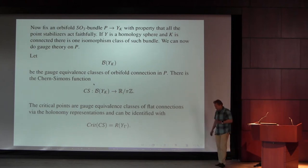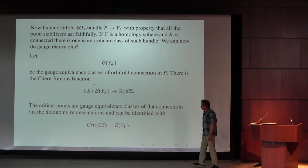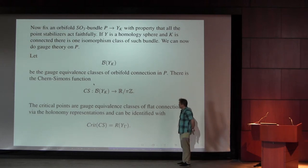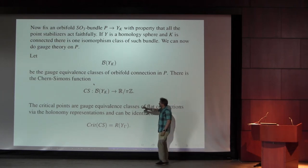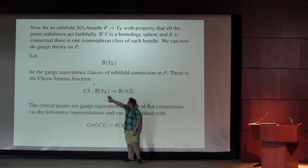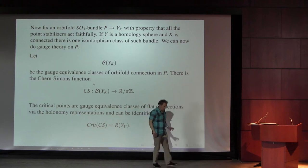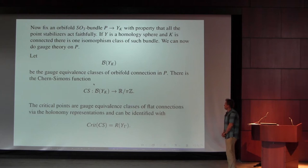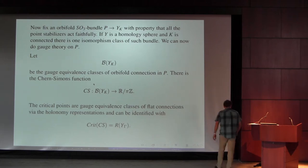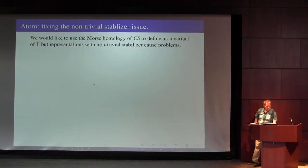If you're a Floer theory aficionado, you know that the bane of our existence for those of us who do it is that the gauge group typically doesn't act freely on the space of connections. There are connections that have a stabilizer, and it's useful to get into a situation where you can avoid connections that have a stabilizer. I want to explain one way to do that which is a little different than the way we did it before.